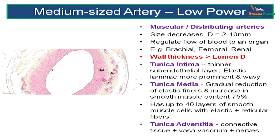Next we come to the medium-sized artery, also called the distributing artery. Examples include the brachial artery, the axillary artery, and the femoral artery. Their wall thickness is more than the luminal diameter. The tunica intima is slightly thinner than in elastic arteries, but the elastic laminae are more prominent here because there are fewer elastic fibers in the tunica media. The tunica media gradually has a reduction in elastic content and an increase in smooth muscle content — up to 75 percent — with up to 40 layers of smooth muscle cells along with a few elastic fibers. The tunica adventitia has connective tissue, some vasa vasorum, and nerves.